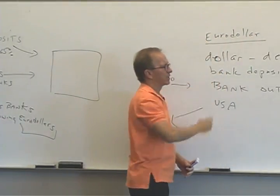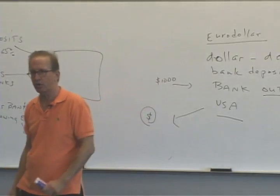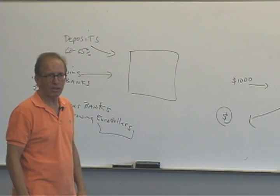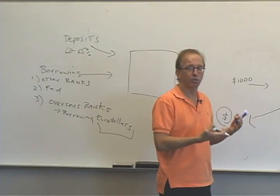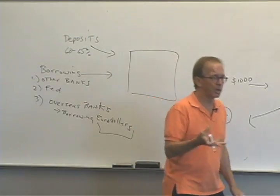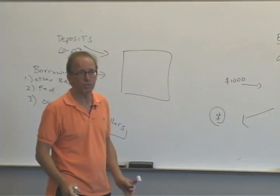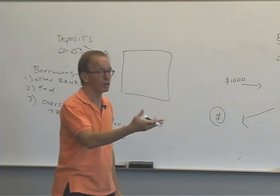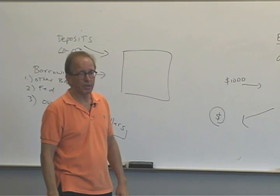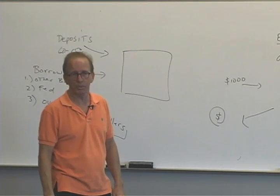The definition says outside the United States — it doesn't say in Europe. This got started in Europe, which is how it got that name: eurodollar. But now it applies to a dollar-denominated deposit in any bank outside of the United States. So if you put dollars into a checking or savings account in a Japanese bank, denominated in dollars not yen, and they pay you back in dollars — that's a eurodollar account, even though it has nothing to do with Europe.